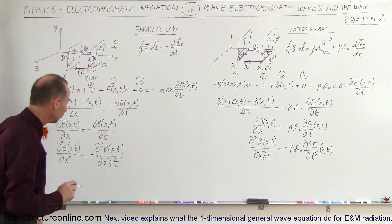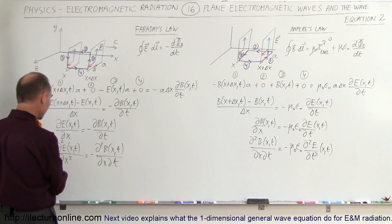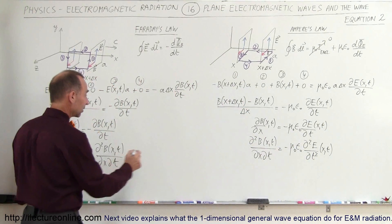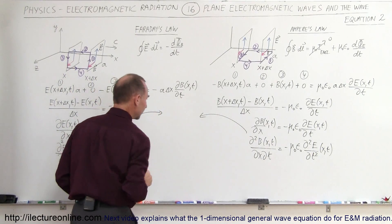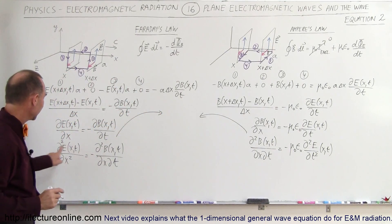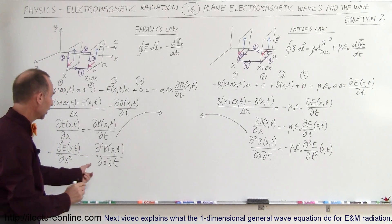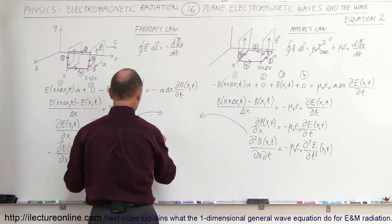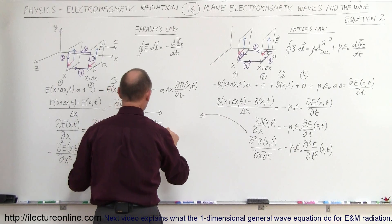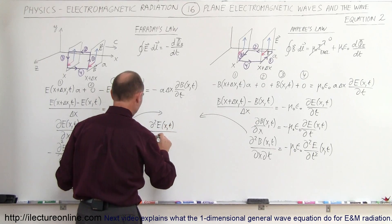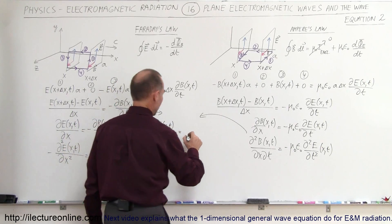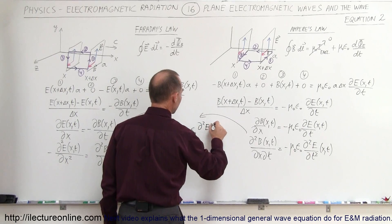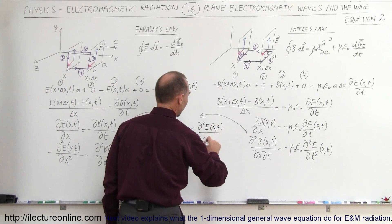Now notice: the mixed partial of B on the left side of the first equation equals the negative of the mixed partial of B on the left side of the second equation. Combining these two equations by substituting one into the other, we get: the second derivative of E with respect to x equals mu-nought epsilon-nought times the second derivative of E with respect to time.